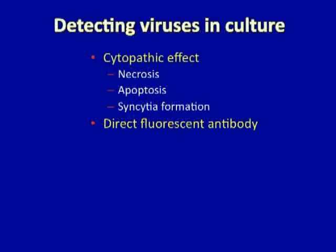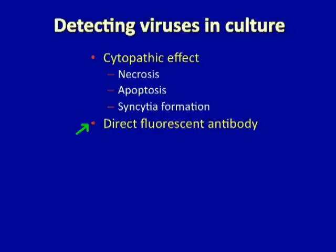Although viruses can be grown in tissue culture, they cannot be seen by the light microscope. So one has the problem of determining when a tissue culture is infected with a virus. What we typically rely on is what is called the cytopathic effect — that is, the effect the virus has on the host cell. Some viruses may drive their host cell to become necrotic, some may induce apoptosis, and some may cause cells to fuse together and form syncytia. Any of these characteristics in tissue culture can be regarded as a cytopathic effect, or CPE, and is an indication that the virus is growing in the culture. For viruses with minimal CPE, it may be possible to use a fluorescent-labeled antibody against the virus to detect it once it has started to grow in the culture.